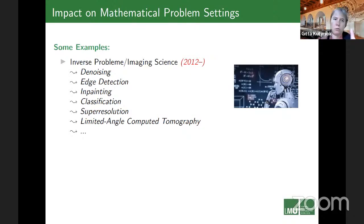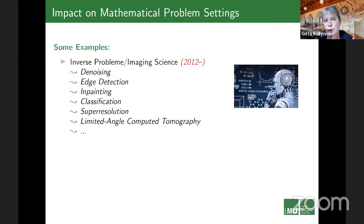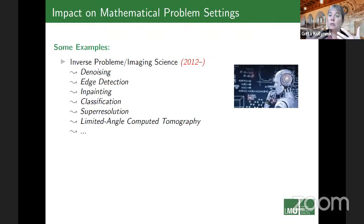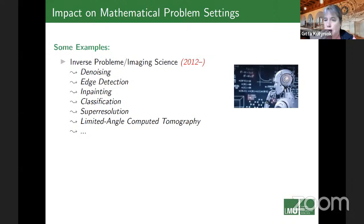One can ask why imaging science is so accessible to learning-type methods. An image itself has no rigorous model, and that makes this field so accessible to methods from artificial intelligence.